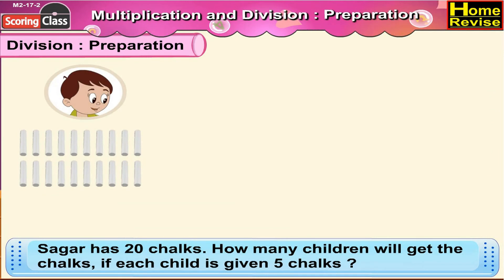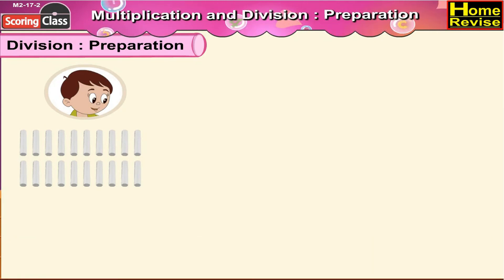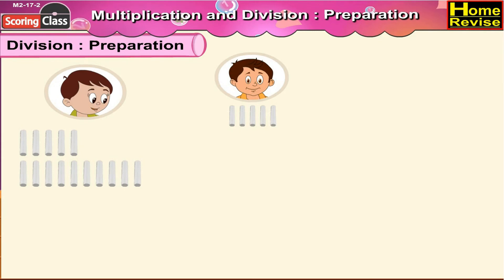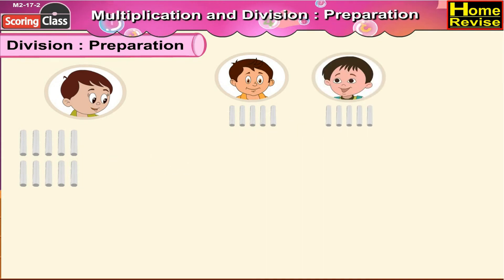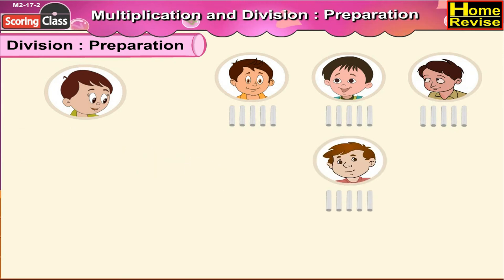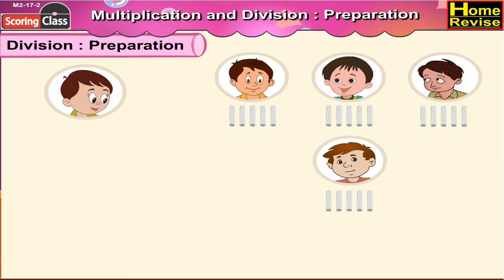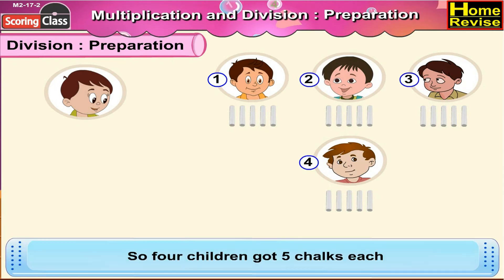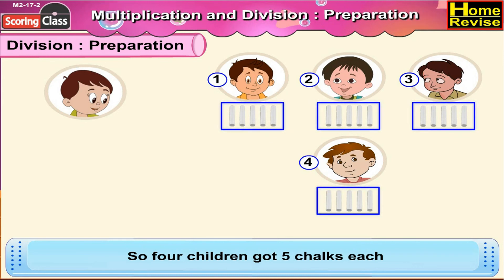Sagar has twenty chocs. How many children will get the chocs if each child is given five chocs? Now, Sagar has twenty chocs. He distributes five out of these to the first child, then five chocs to the second child, five chocs to the third child, and the remaining five to the fourth child. Chocs are finished. Now, let us count the total number of children. One, two, three, four. So, four children got five chocs each.